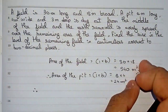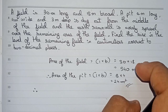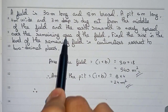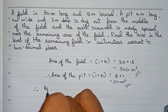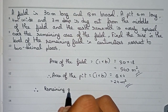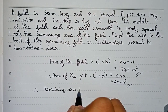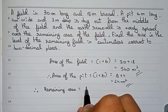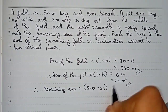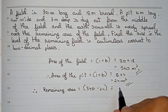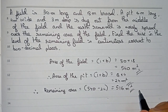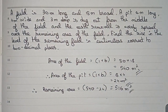From the area of the field and the area of the pit, we can find the remaining area. Remaining area is equal to 540 minus 24, which becomes 516 meters square.